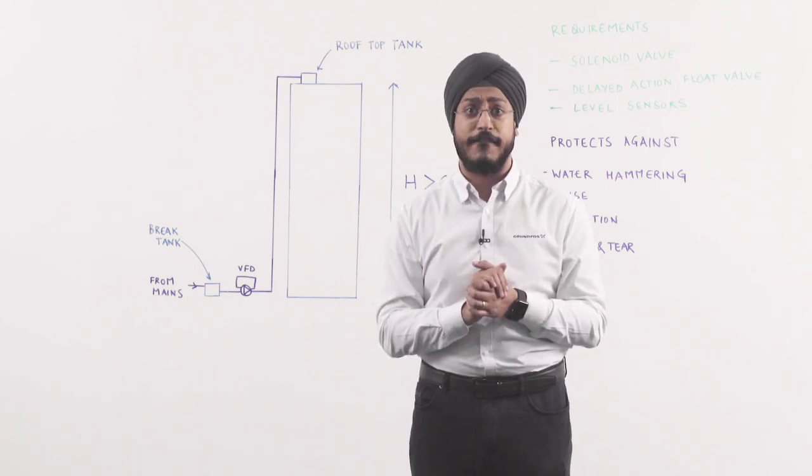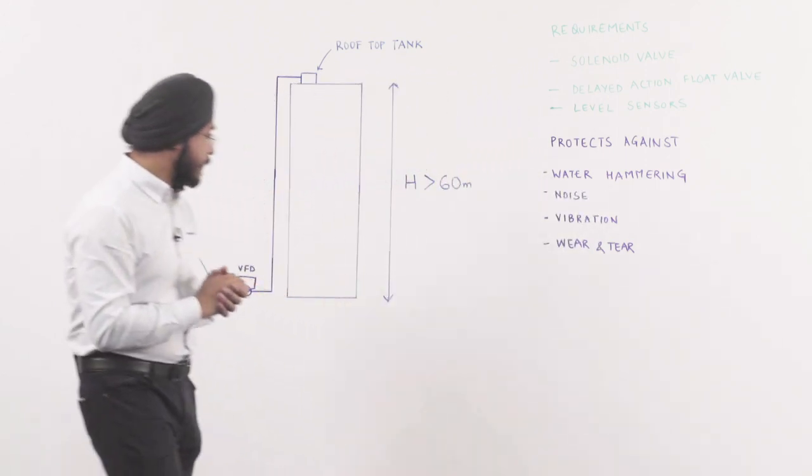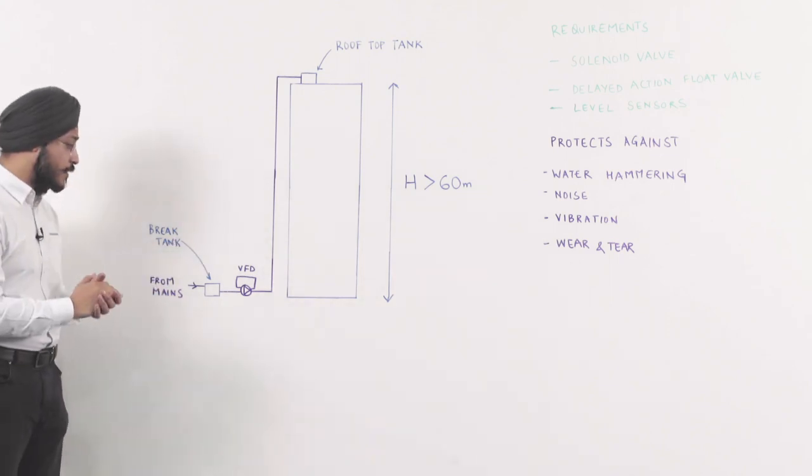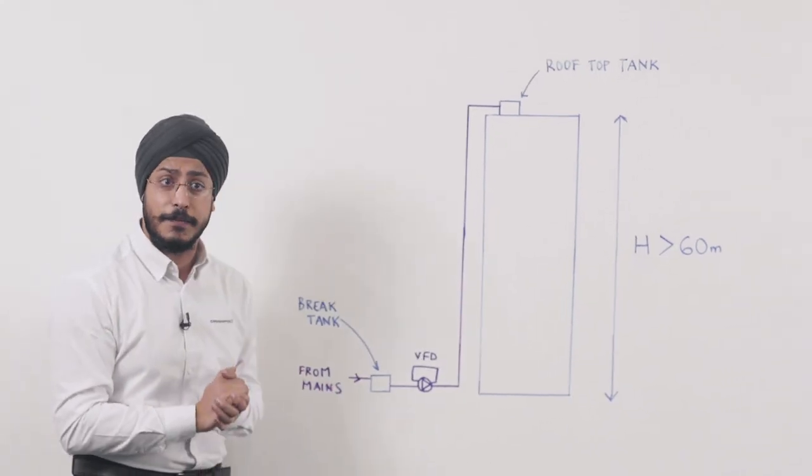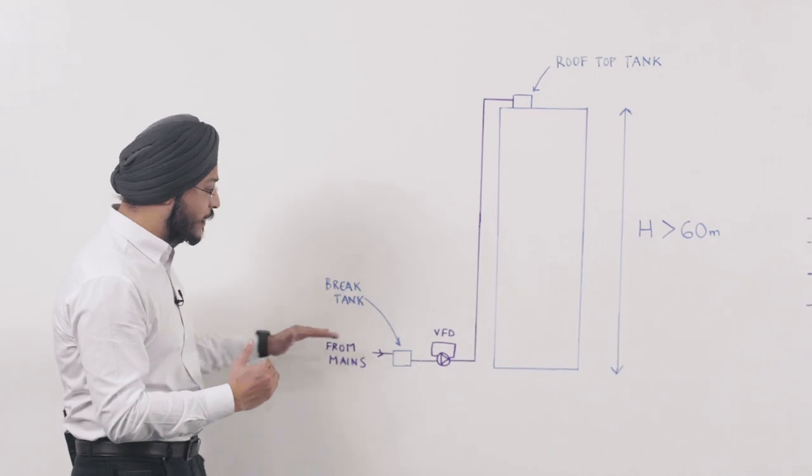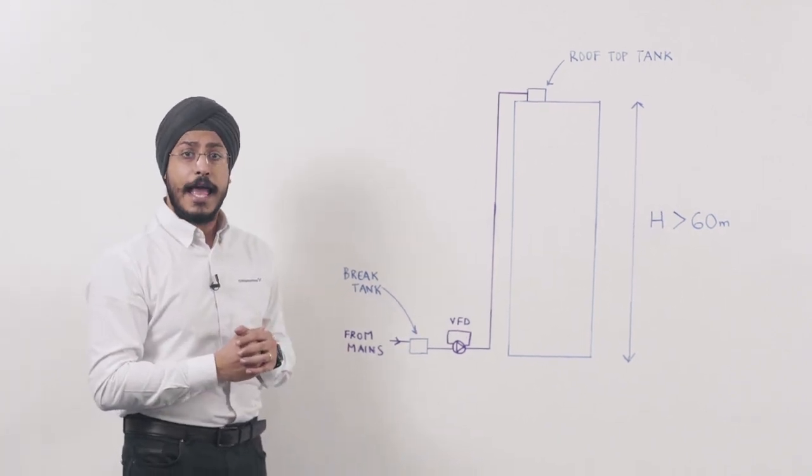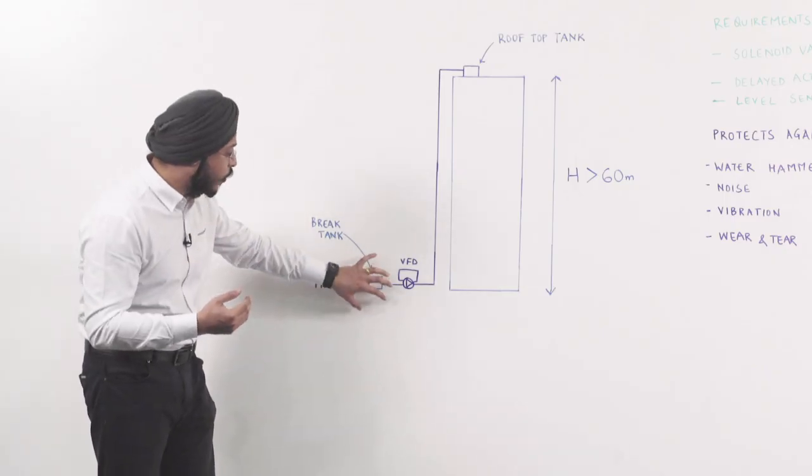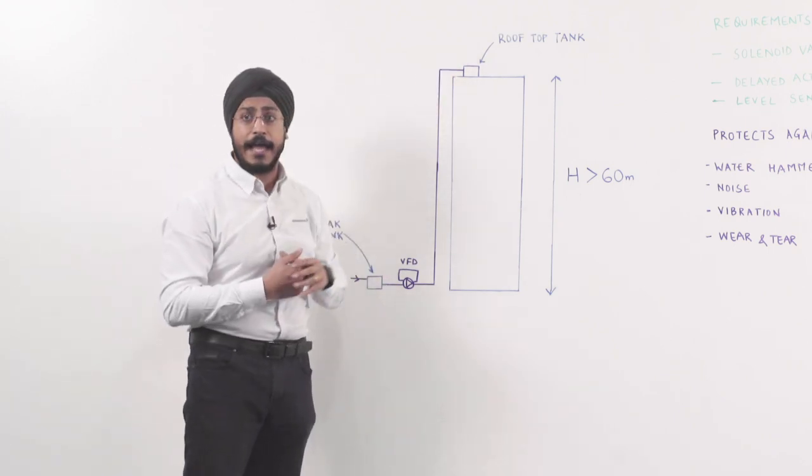Let's have a look at some of these advantages. So typically, in a lot of high-rise buildings, we will have a brake tank in the basement, which is where the water mains delivers its water. And the requirement is to transfer the water from this brake tank to this rooftop tank.